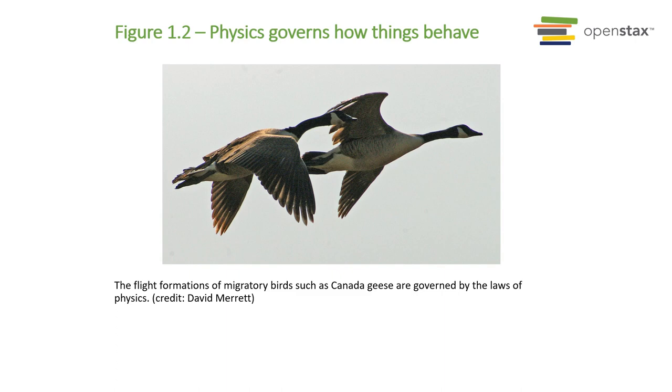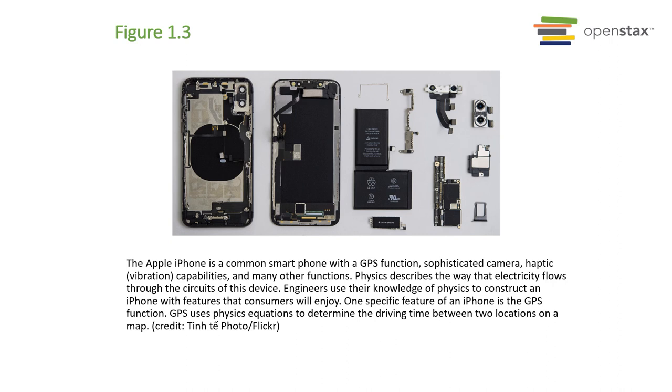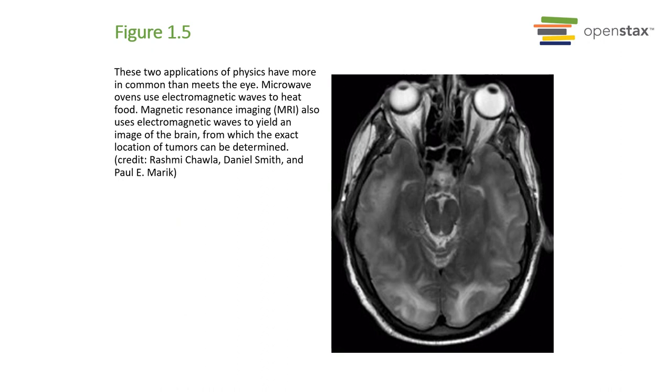One obvious example is your phone. If you understood the electronic components, understood the communication mechanisms with electromagnetic radiation, it would make sense on how the GPS function is working. That's just one example.